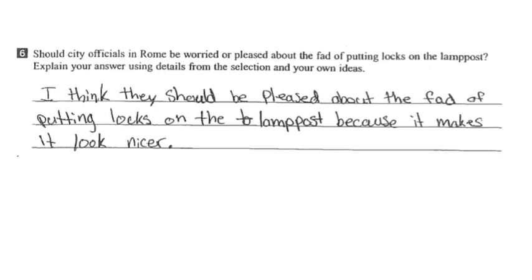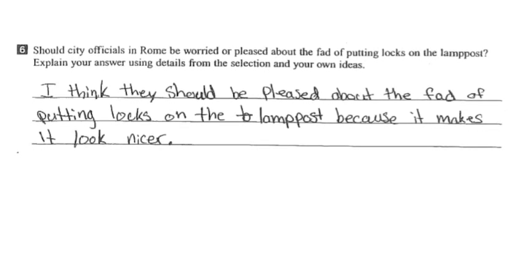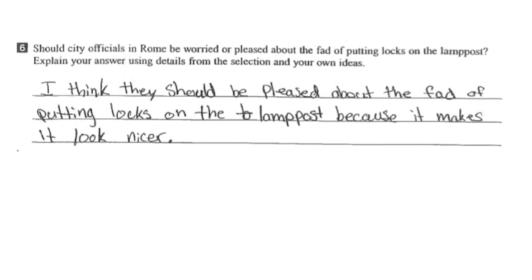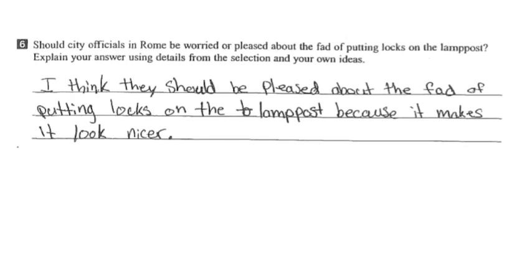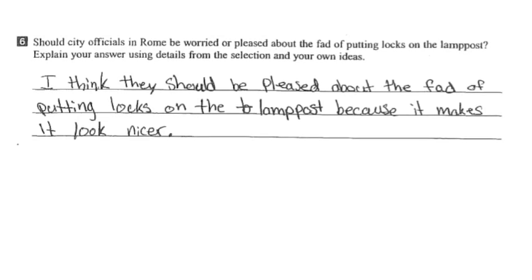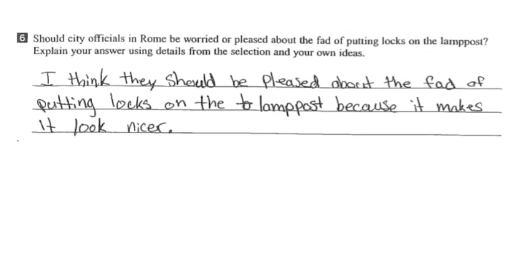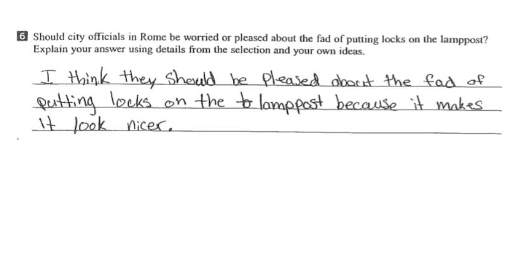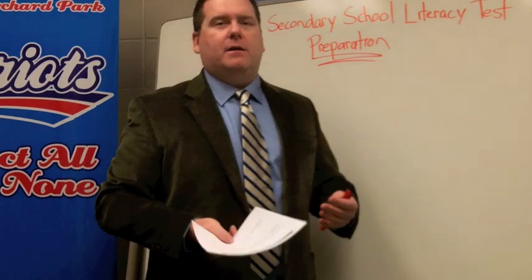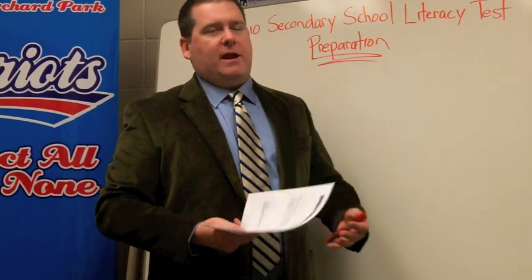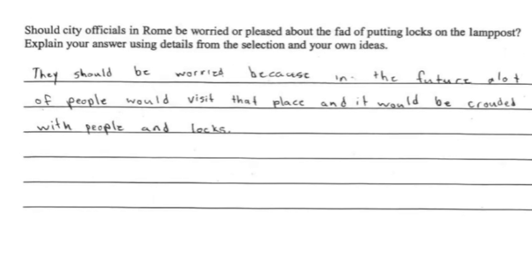In the first example, the student says 'I think they should be pleased about the fact of putting locks on the lamppost because it makes it look nicer.' Part of the problem is, first and foremost, it's too short. Secondly, the explanation is so unclear — it says 'it makes it look nicer' but those 'its' don't really refer to anything. Somebody reading it would not necessarily understand exactly what the student means.